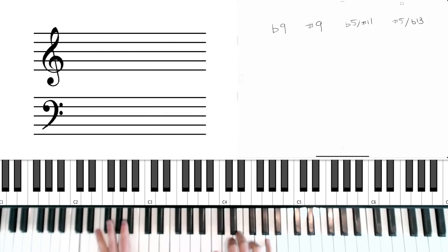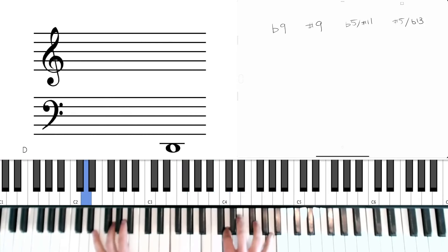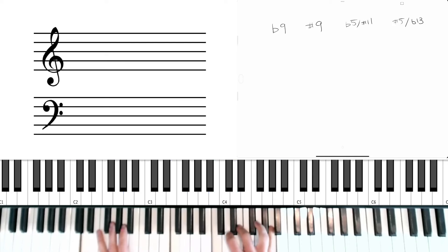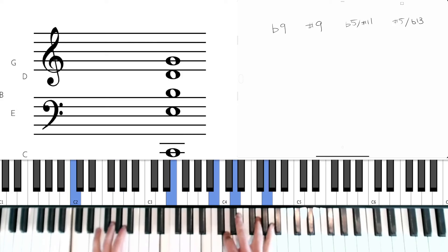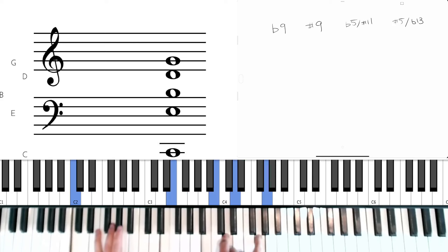So if we're using standard voicings for a two five one in C - D minor seven to G seven to C major - we could throw in the flat nine, we could throw in the sharp five or flat 13, E flat, over the G seven, and then very frequently we could put both in.